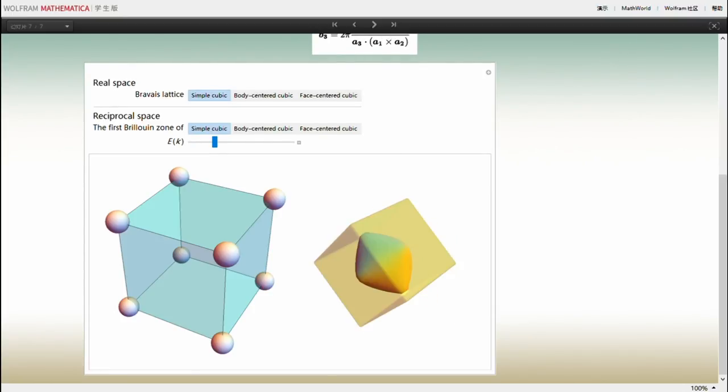As we can see, when the energy goes up, distortion begins to appear, and when the energy reaches the boundary of the first Brillouin zone, openings of holes appear at these boundaries.